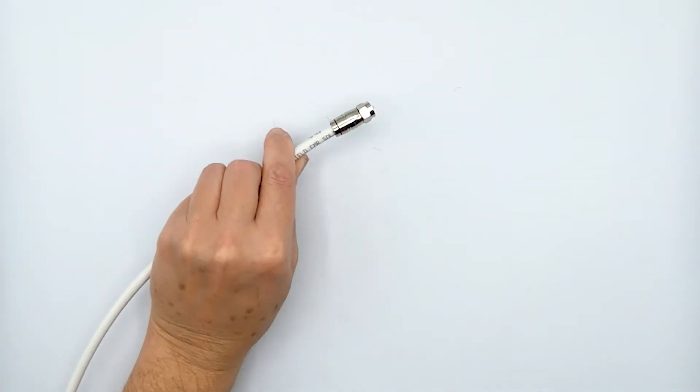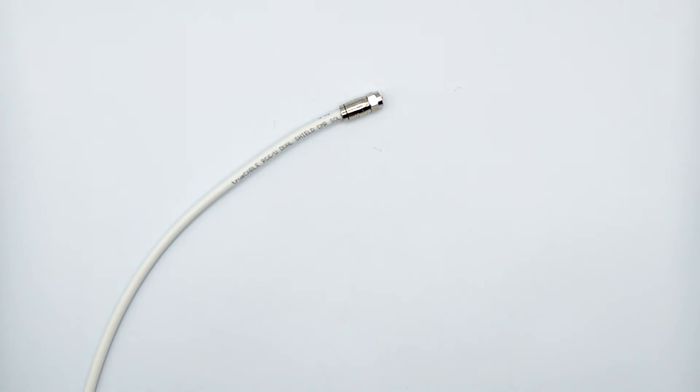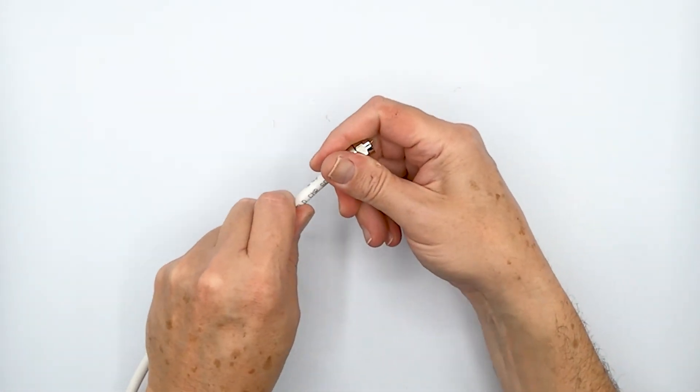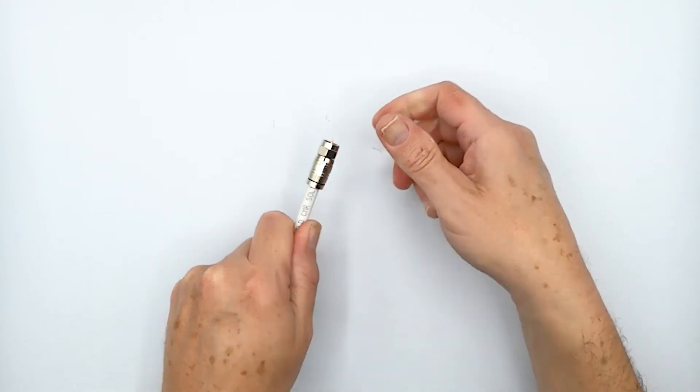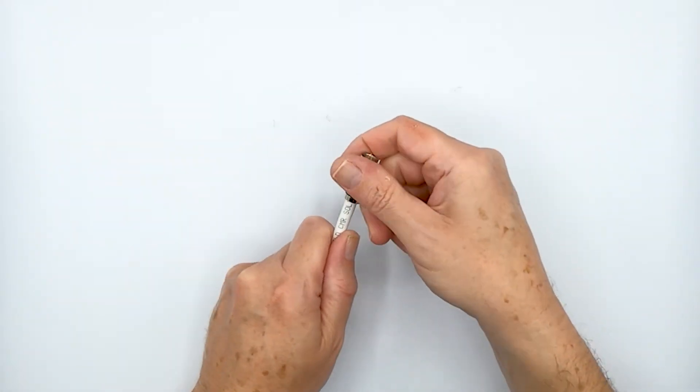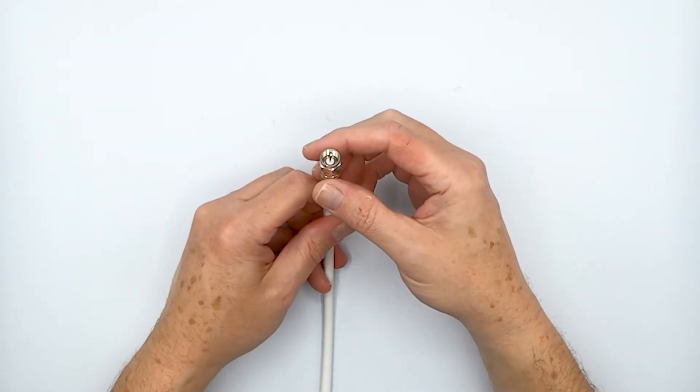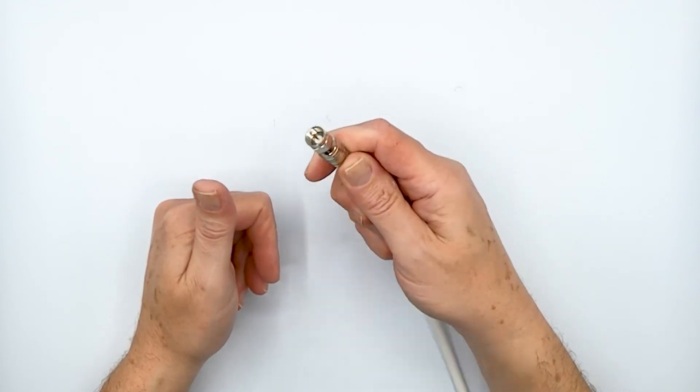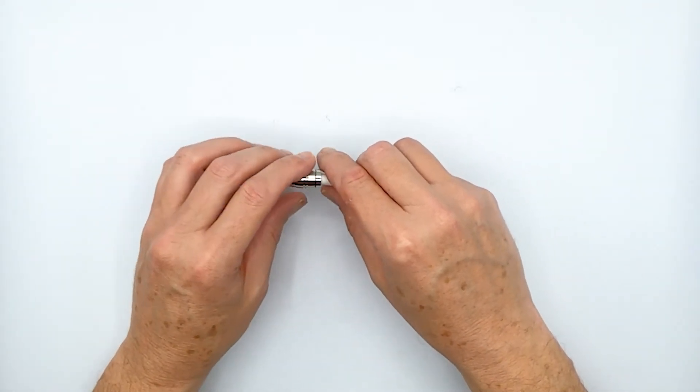There we go, a perfectly done compression connector. It's not going to be coming off easily - you'd really have to get a wrench on there and yank it off in order to get it off. So that's on there really well and it's ready to screw into something. That is our double shield coaxial cable.